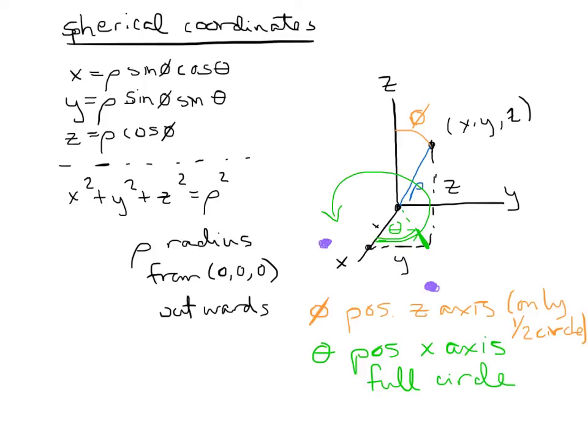Phi starts from the positive z and goes down, kind of like an umbrella. So there's phi and then theta would make it so that we would hit that negative y value and the positive x. All right, this coordinate system is a little bit, we'll cover this again and kind of go over this one again at some point.